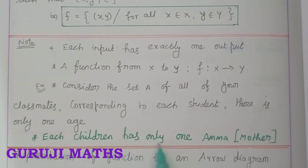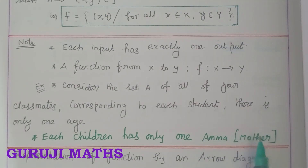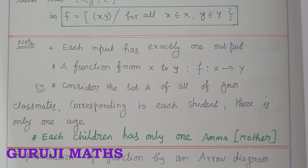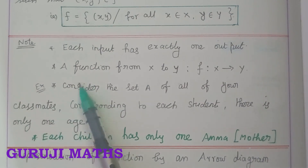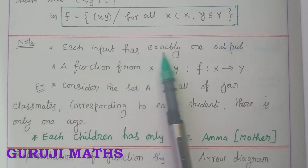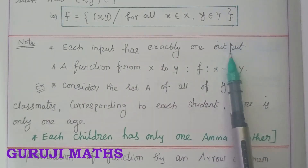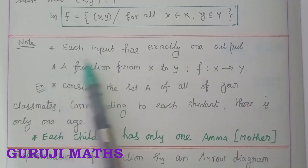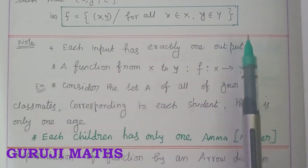A best real-time example: each child has only one mother. Similarly, each input has exactly one output — one input gives one output.